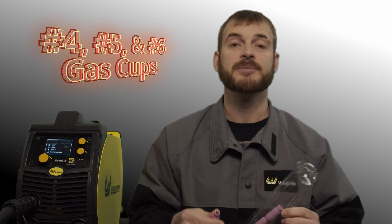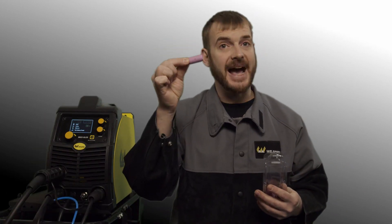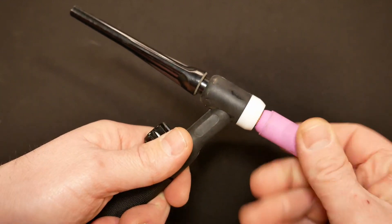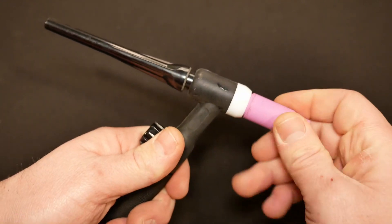The consumable kit that's included with the 210 LCD will include three different gas cup sizes: a number 4, 5 and a 6. Depending on the depth of your joint or the material you're welding, you might need different sized gas cups. For our purposes today we'll start with a number 6 gas cup. Go ahead and thread the gas cup over the collet body until it's tight. Don't over tighten it or you'll crack the ceramic.